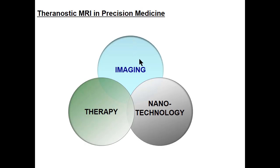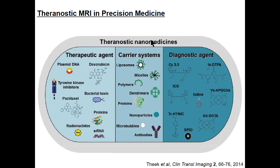Theranostic imaging is at the interdisciplinary interface of imaging technologies, therapy, and nanotechnology. We combine a therapeutic agent — such as a chemotherapeutic agent, a bacterial toxin, or tyrosine kinase inhibitors — attached to some sort of carrier system such as liposomes, micelles, or other carriers. We also have diagnostic agents — imaging agents detectable by PET or optically, or by any other imaging modality.